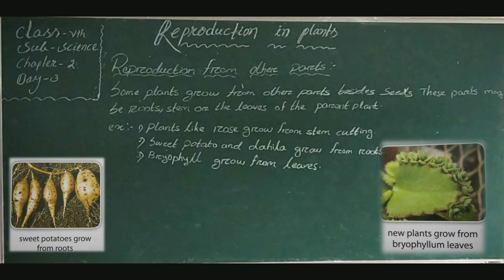Hi students, good morning. Today we will teach 5th class science chapter number 2, Reproduction in Plants. In our previous class we discussed about reproduction in seeds. Today we continue this chapter. The next topic is reproduction from other parts.